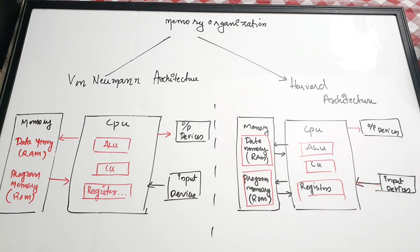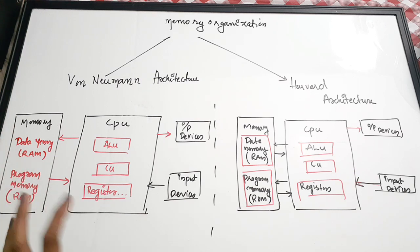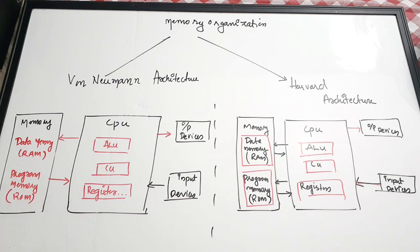The main problem with Von Neumann architecture is that it cannot access both data and instructions at the same time — using a single bus, it can only point to either the data or the program, not both. There can also be a congestion problem since everything is stored together in a single memory without any partitions.